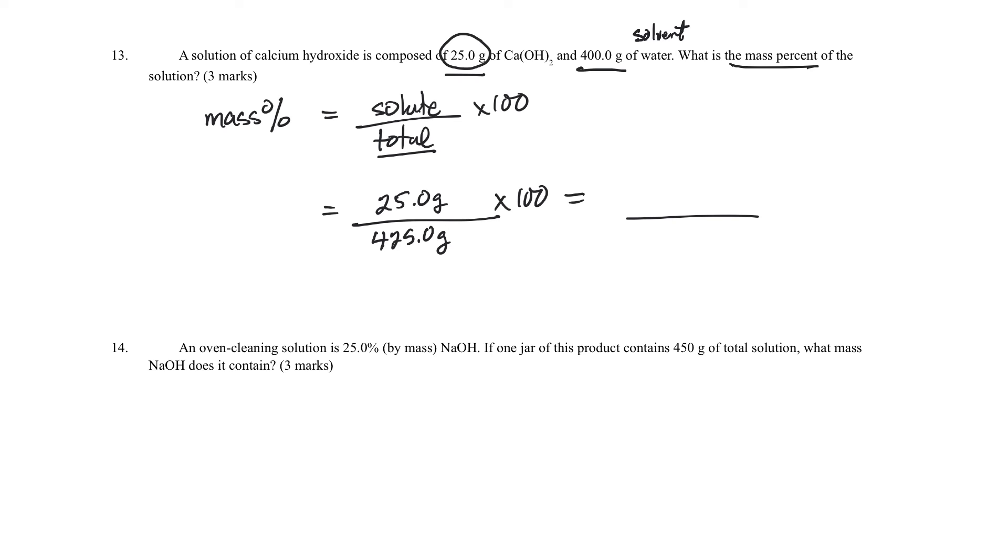So 25 divided by 425 times 100 would be 5.8823%. For sig figs, I think I have three everywhere, so 5.88%. Okay, hopefully that helps you with those three.